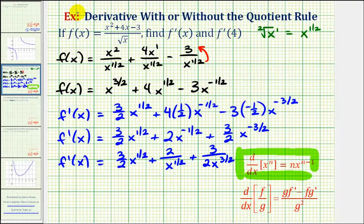So now if we want to find f prime of four, which would give us a slope of the tangent line at x equals four, we'll substitute four for x.